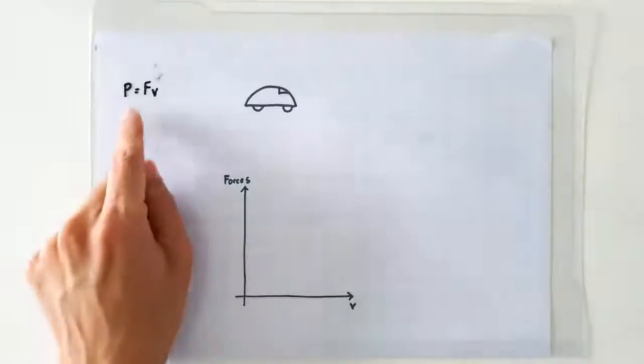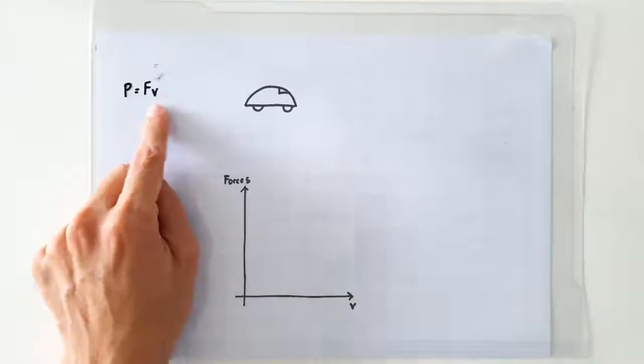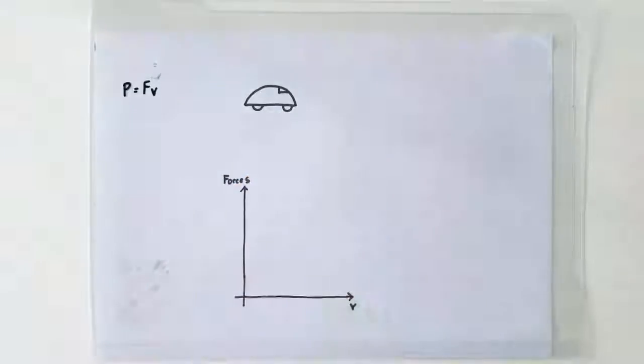Hello, what has the formula P equals F times V got to do with the maximum speed of a car? That's what I'm going to talk about in this video.